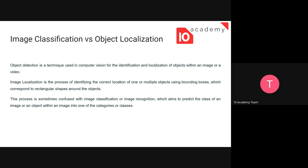Object localization will localize or place a specific marker where the object is found in the image — it puts a bounding box or indication that there is an object in that specified space. It identifies an object from the whole image. Image classification, by contrast, just classifies the entire image as one specific label, such as X or Y.